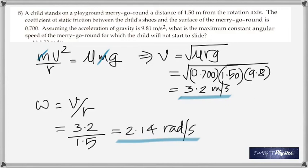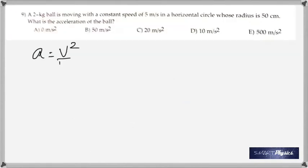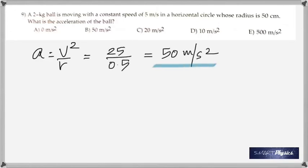Brings us to the last question because number 10 is repeated. And number 9 is a straightforward question. 2 kg ball, speed is given as 5 m per second. And you've got to find the acceleration. It's going round. So it's centripetal acceleration, which is v squared by r. That's 50 m per second squared. And so these were the 10 questions.